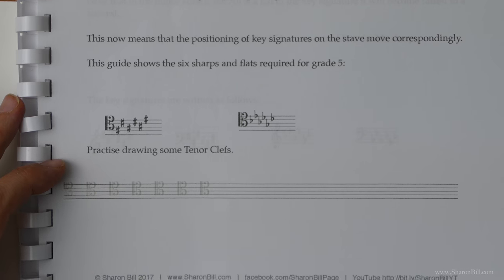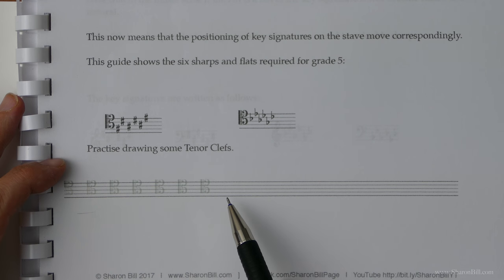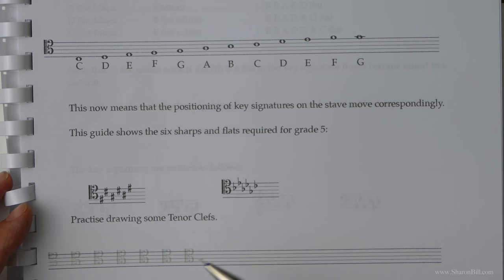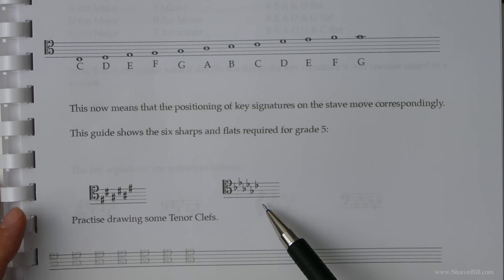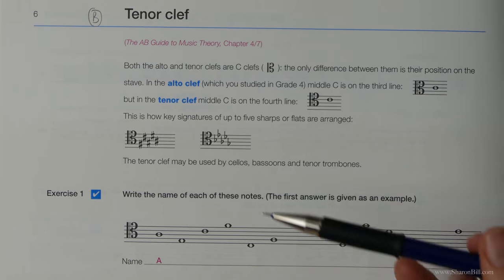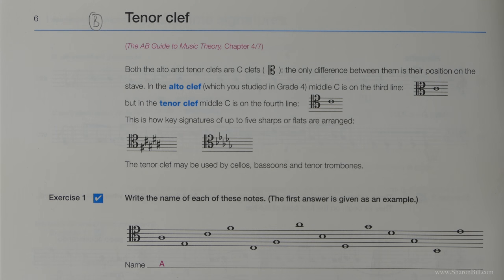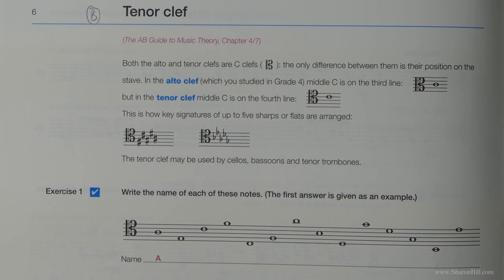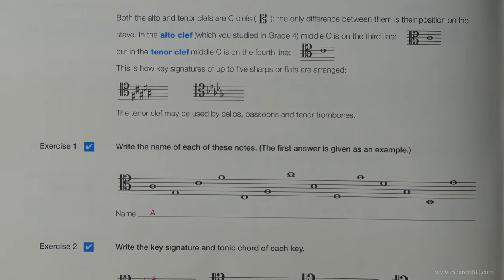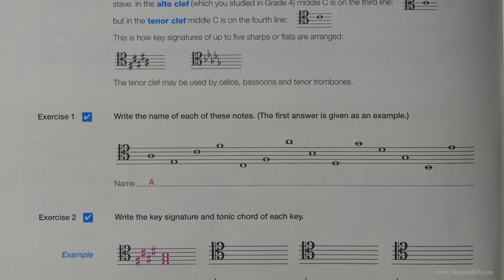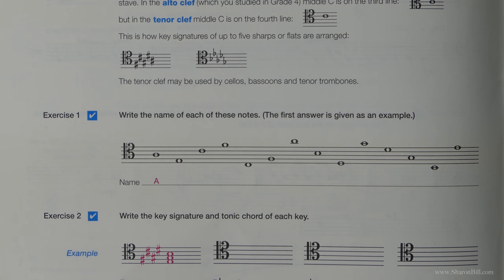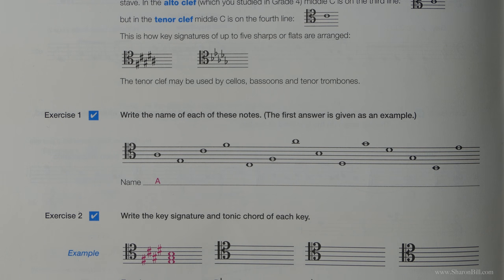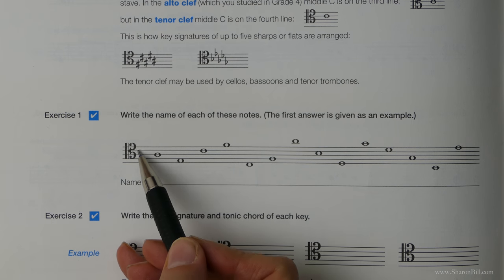If you want to have a practice at some of the tenor clefs, you can just trace over these to begin with, but I don't think you'll find it too difficult. Then, of course, you've got to now account for repositioning all of your sharps and flats for your key signatures. So if you want to just go ahead and have a go at naming the notes in Exercise 1. If you get stuck, you can refer to the PDF document. However, have a go at working it out without referring to the document, and then you can double check yourself. It's just a good idea in terms of revision to work that out.